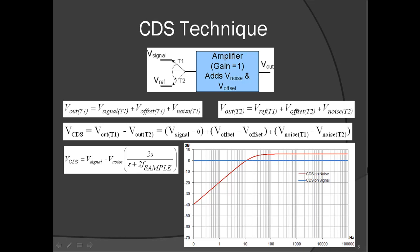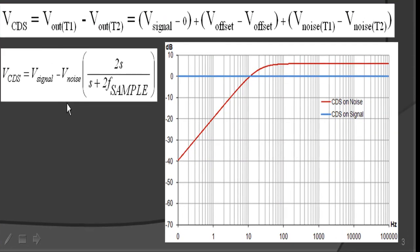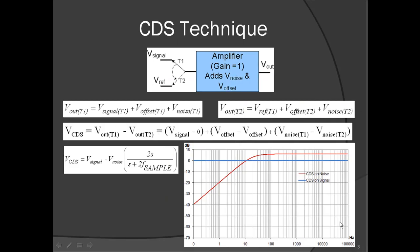Assuming V-ref is ground, the frequency domain equivalent of the output obtained after CDS is shown in this equation. This shows that CDS passes the signal unaffected while it acts as a high-pass filter for noise. The frequency domain representation is shown in graphical format here. The implementation of CDS can be either in hardware or firmware, and this video shows the firmware method. The CDS technique is not system specific — it can be applied to PSoC 1, 3, or 5. This video is valid for both application note 2226 for PSoC 1 and application note 66444 for PSoC 3 and 5. The figures shown in future slides are for PSoC 3 and 5 of application note 66444.